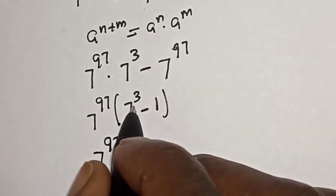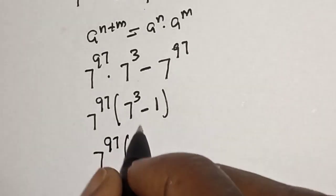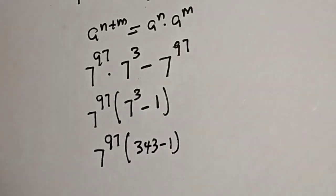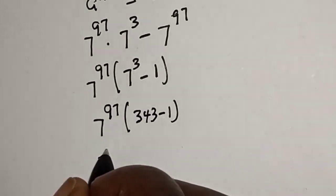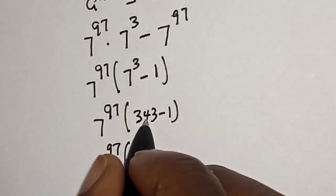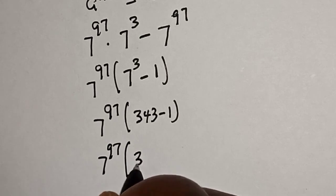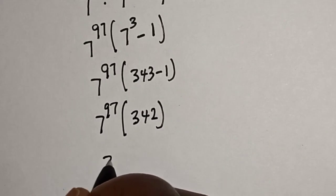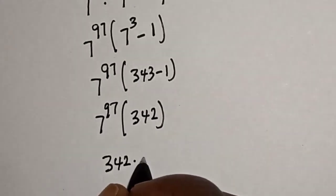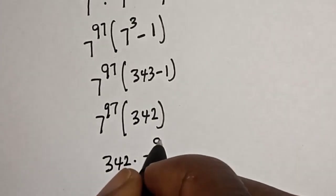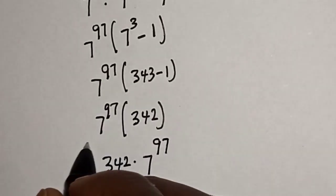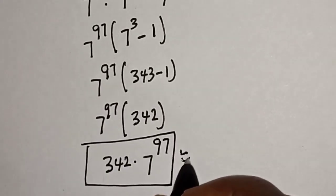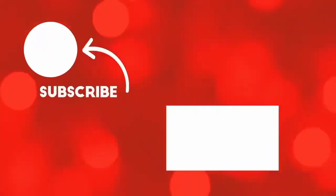7 raised to power 3 is 343. So we have 343 minus 1, which is 342. Therefore our final answer is 342 multiplied by 7 raised to power 97. If you enjoyed the class, please don't forget to like, share, comment, and subscribe. Thank you.